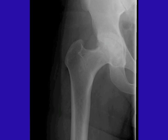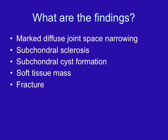This is what his plain film looked like. Go ahead and take a few moments and try to point out the pertinent findings. Is there marked diffuse joint space narrowing, subchondral sclerosis, subchondral cyst formation, a soft tissue mass, or possibly a fracture? There may be any combination of these findings present on the film.